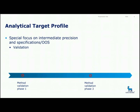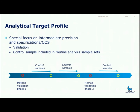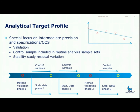In order to estimate intermediate precision, we have data from the validation of the method as a first source. We have also included control samples in our analysis — a sample with a known content which we include each time we run an analysis — as a second source. A third source comes from the stability studies during the different phases. For example, with a content method, we monitor how the content decreases over time, fit a function to this decrease, and the residuals between the fitted function and experimental points give an estimate of intermediate precision. Hereby, we have three different estimates of intermediate precision which we can pool to get a really good estimate.